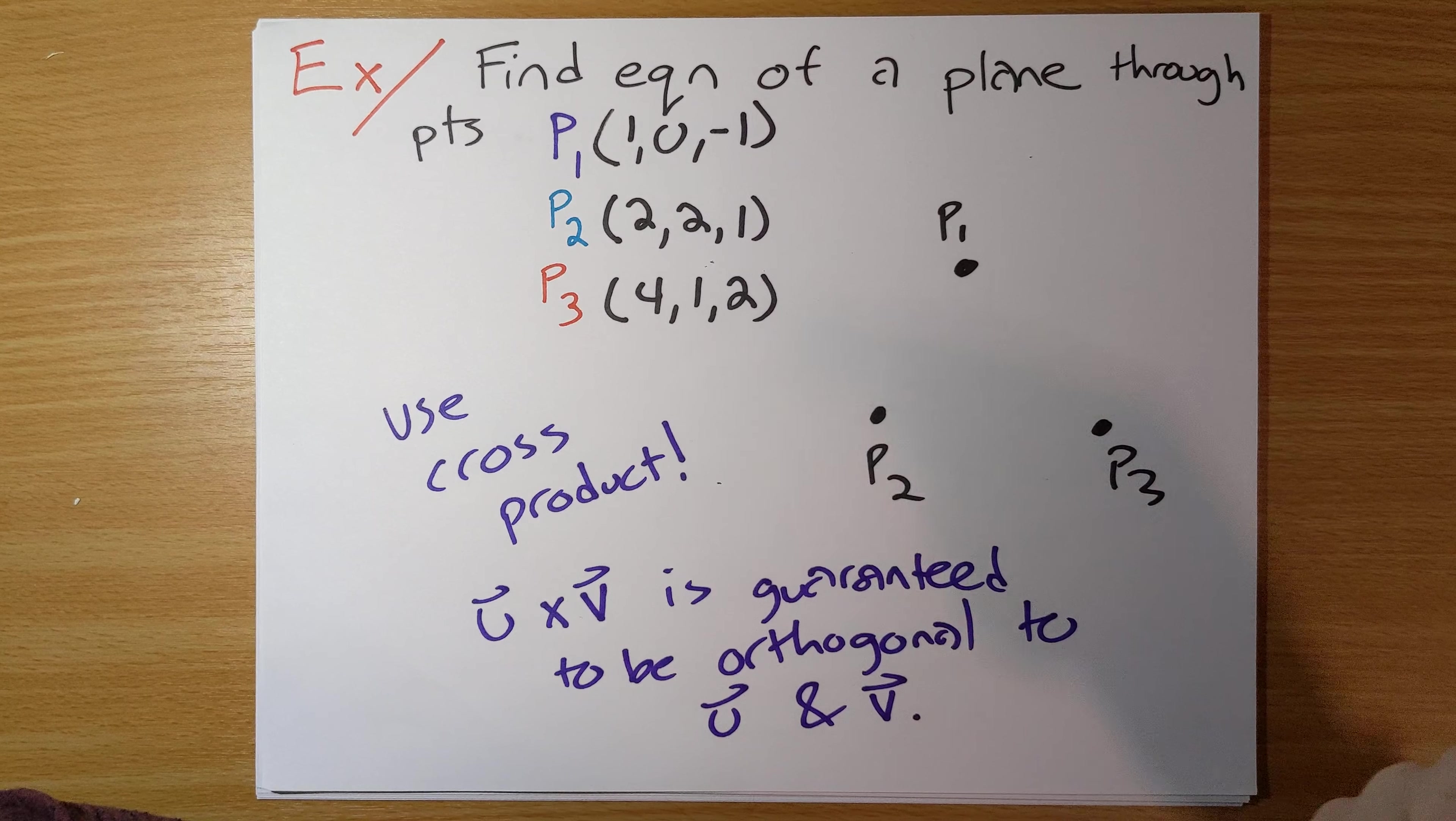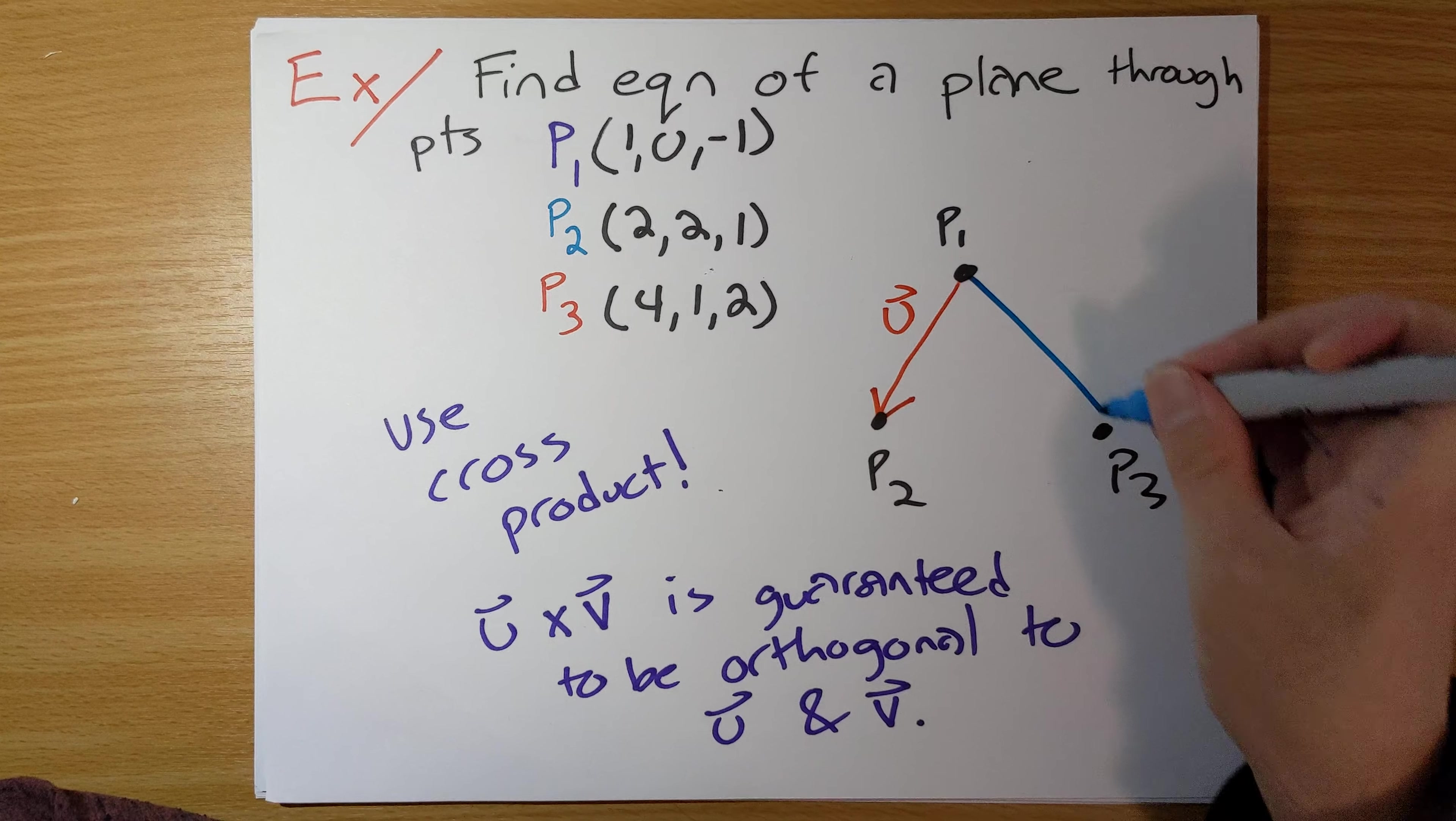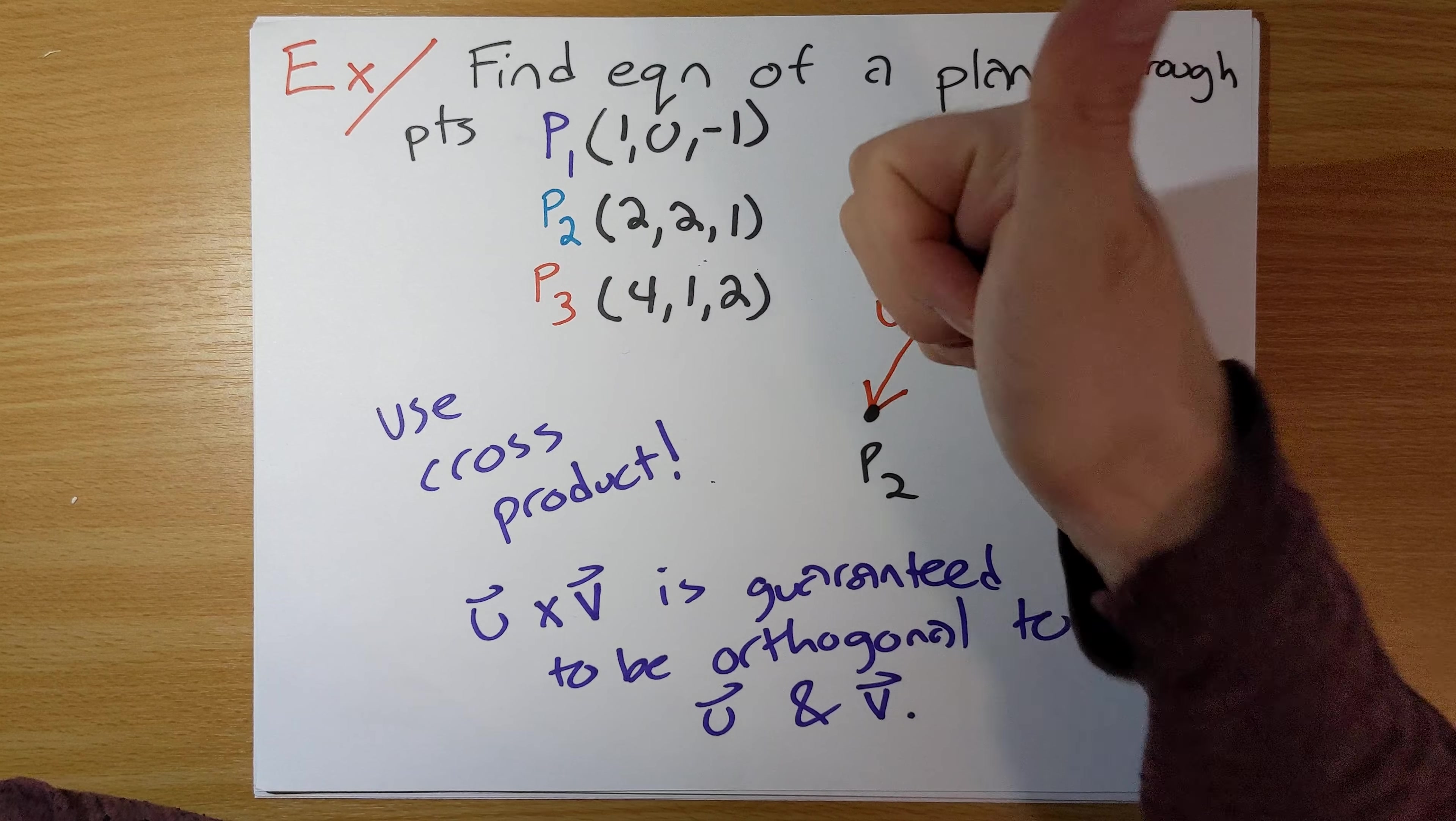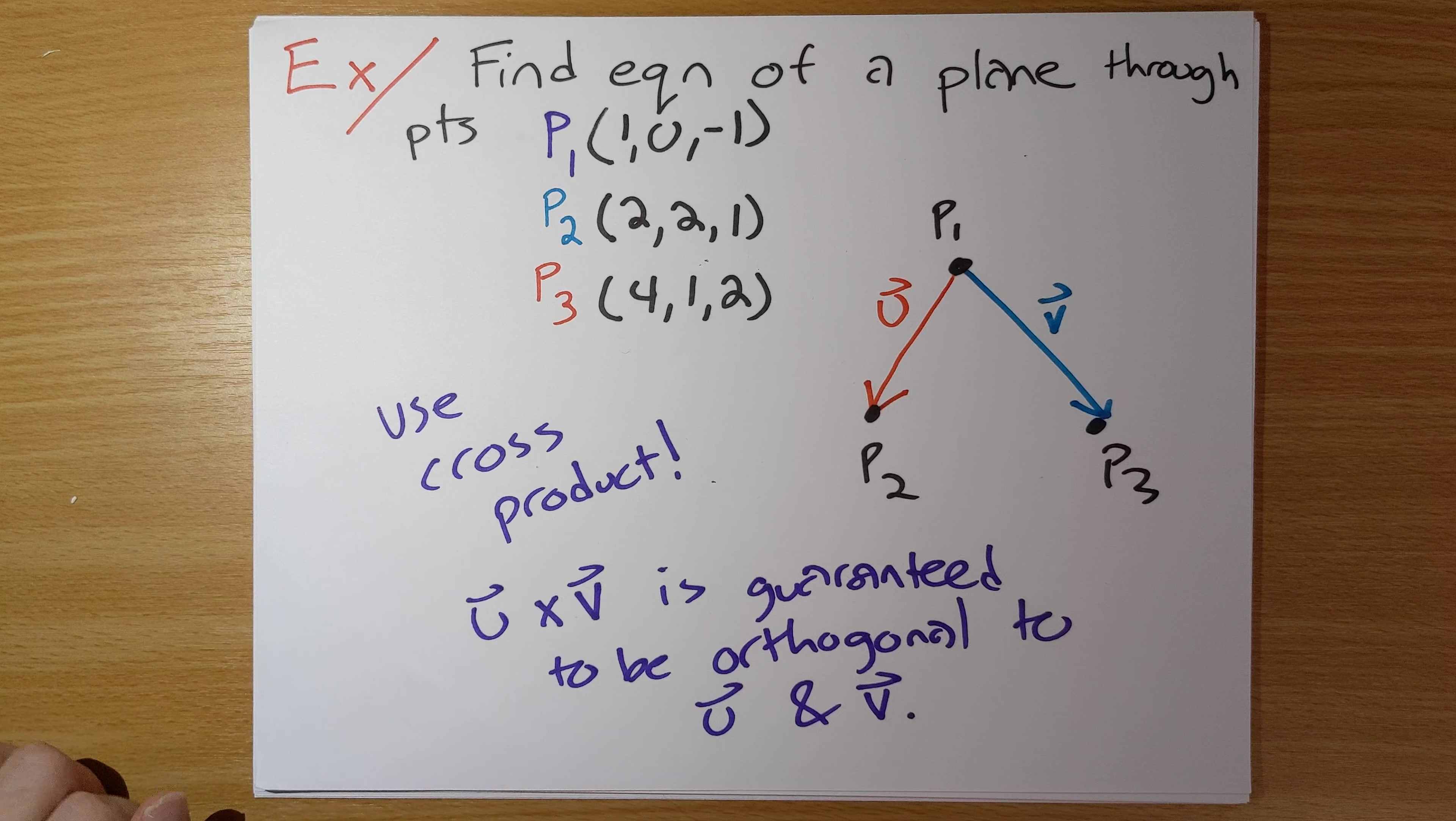When you think about it, that should sound like we're going to use the cross product. Because, if we have U cross V here, it's guaranteed to be orthogonal to U and to V. So, what are we going to do here? Well, P1, P2, P3. Let me form this vector U here. Going from P1 to P2, that's a vector that lies in the plane. I can form this vector V here from P1 to P3, that's a vector that also lies in the plane. So, we take the cross product here of U and V. That is guaranteed to be orthogonal. That's guaranteed to be normal. It's orthogonal to the vectors U and V, which both lie in our plane. So, it's guaranteed to be normal orthogonal to our plane.